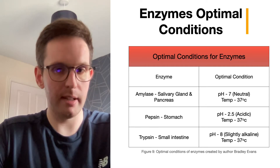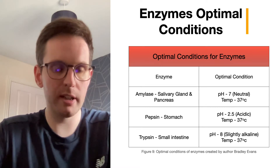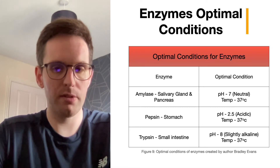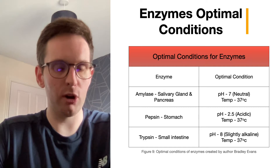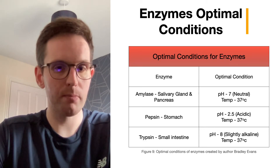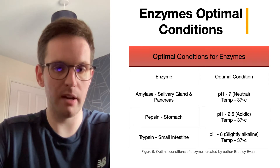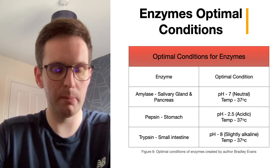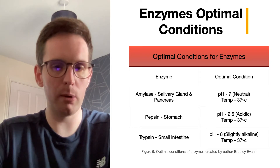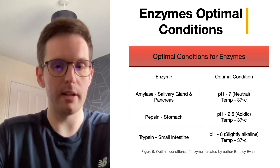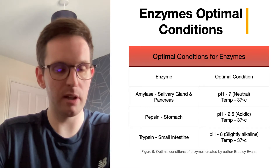Pepsin is a peptide enzyme found in the stomach and is used to break down proteins into their polypeptide amino acids. It has an optimal temperature of 37 degrees and an optimal pH level of 2.5, making it acidic, which is why it's found in the stomach. Trypsin is also a peptide enzyme found in the small intestine and secreted from the pancreas as part of the intestinal juices. It also breaks down proteins into their polypeptide amino acids and has the same optimal temperature of 37 degrees, but prefers a more alkaline pH level of 8.